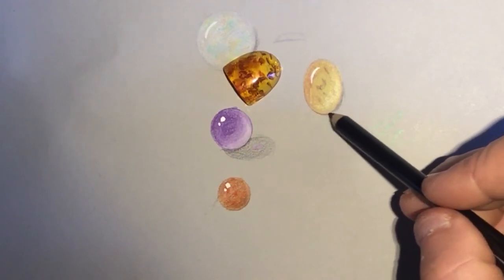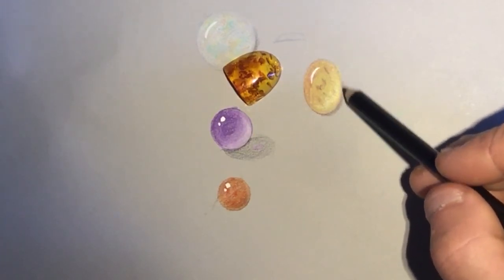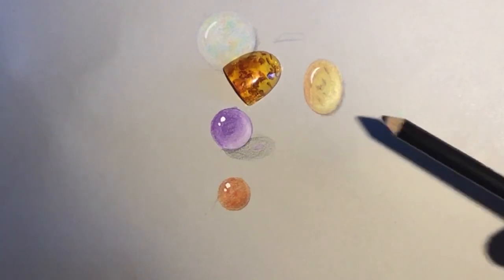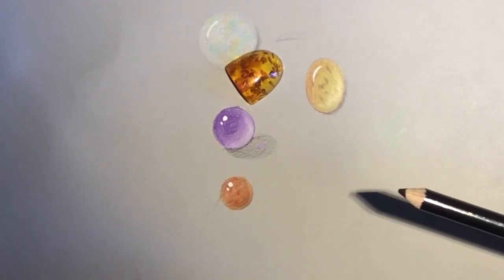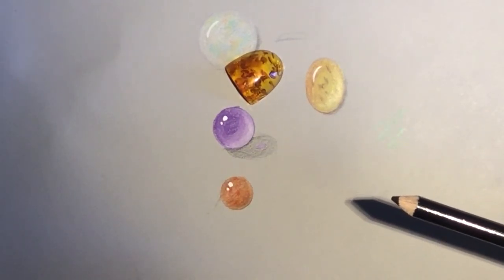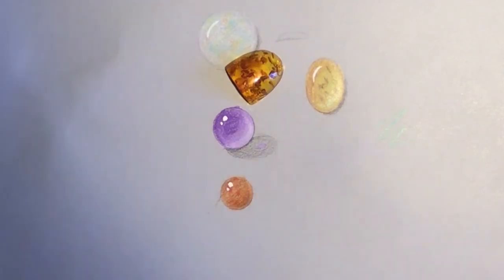But if we were doing this in a—if we weren't just drawing this on a piece of paper, we would have a bezel around this or we would have something securing it into a pendant or whatever we're doing. Okay, that's basically how I draw amber.